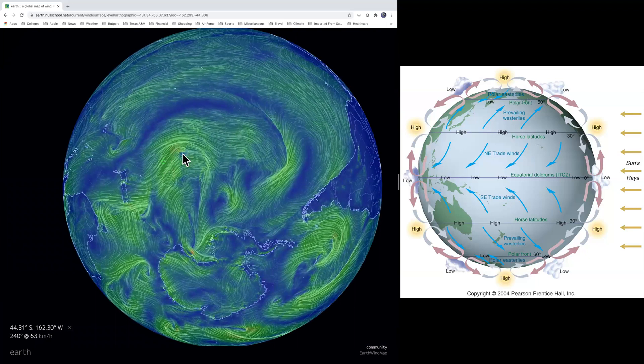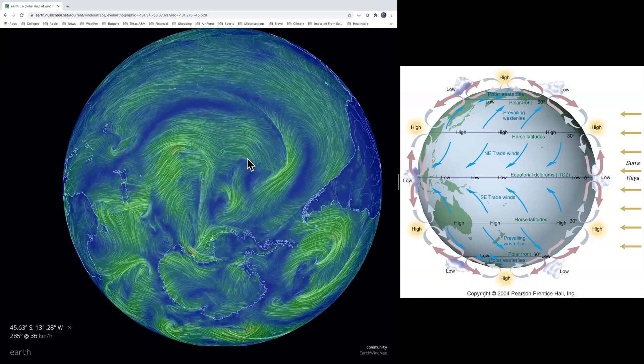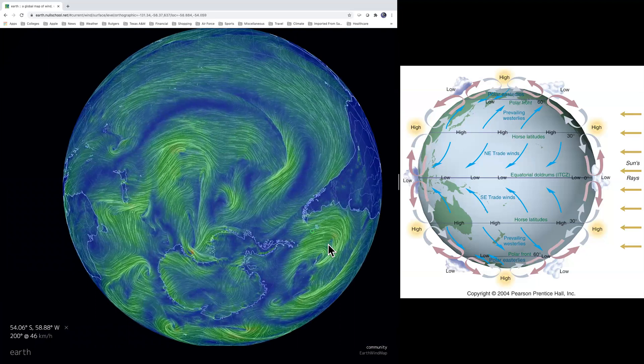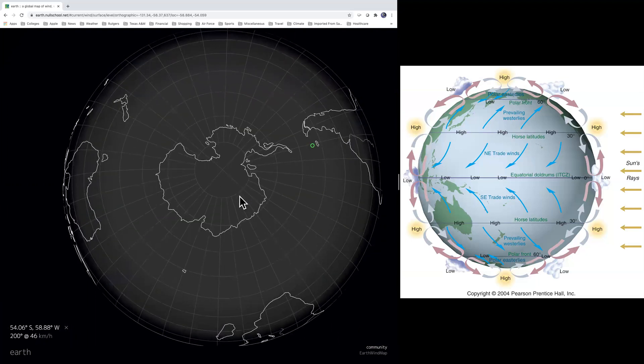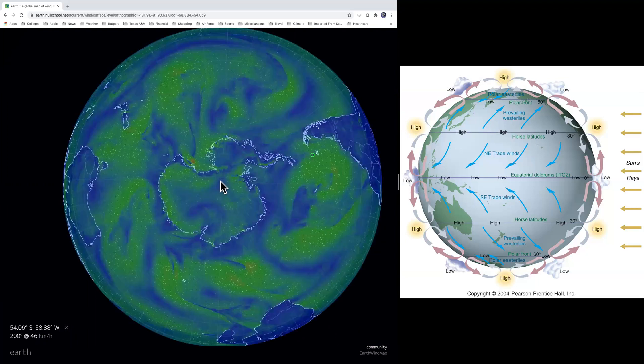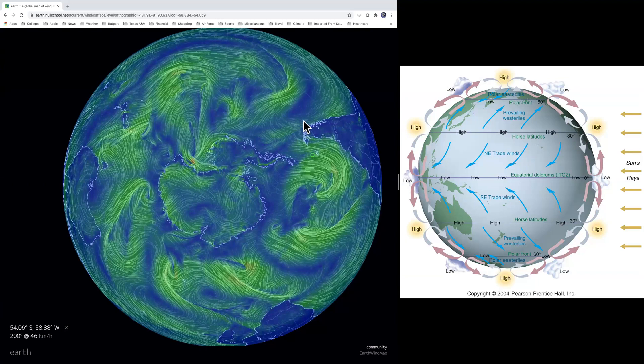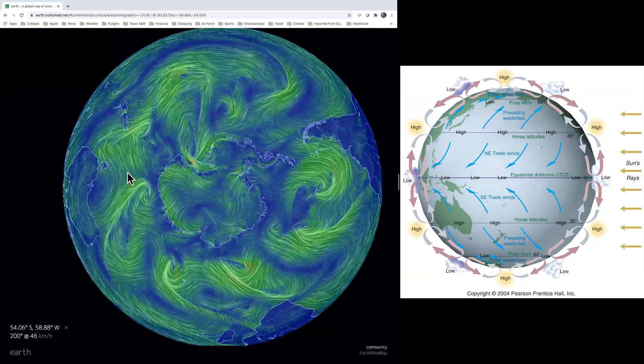And here you have westerlies. Westerly winds moving from west to east. There's this whole thing. If you look at it from the perspective of the south pole, you have generally westerly winds surrounding Antarctica.